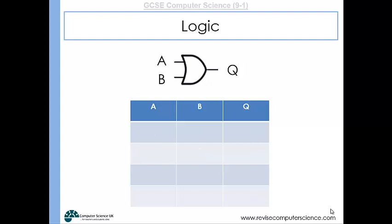With an OR gate, it's the same combinations of inputs. A and B both being one — output would be one. A being one and B being zero — that results in a one. A being zero and B being one — that also results in a one. And both A and B being zero — which results in the output being zero. That is an example of a truth table for an OR gate.